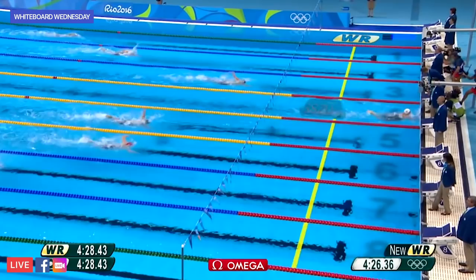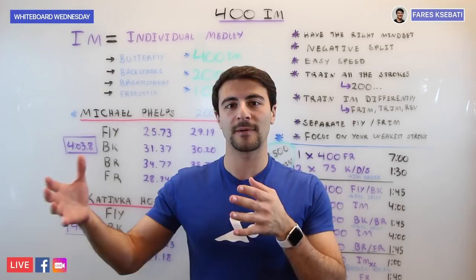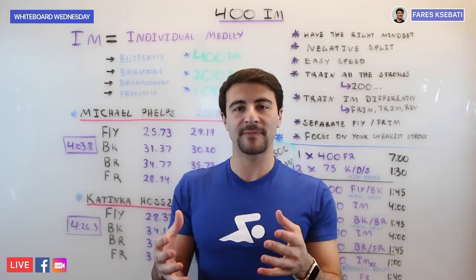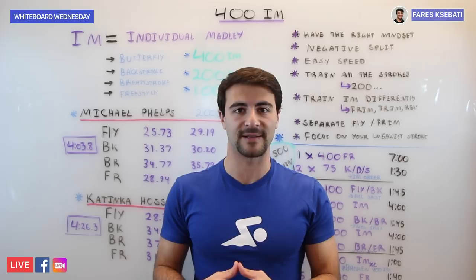IM is short for individual medley. There are four parts of the medley, and in a 400 IM you swim them butterfly, backstroke, breaststroke, and freestyle. There are three different versions of the IM: the 400 IM, the 200 IM, and the 100 individual medley. Only the 200 and 400 IM are contested at the Olympic Games and in long course competition.